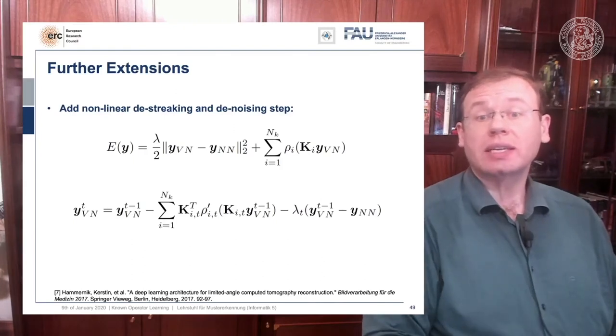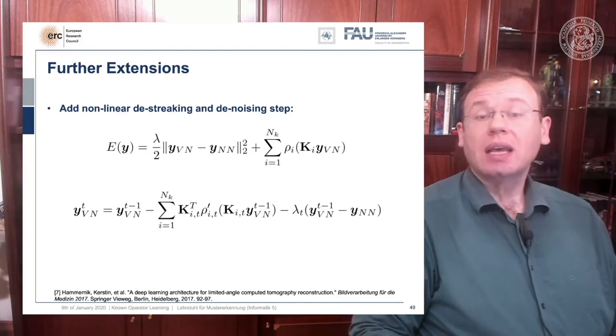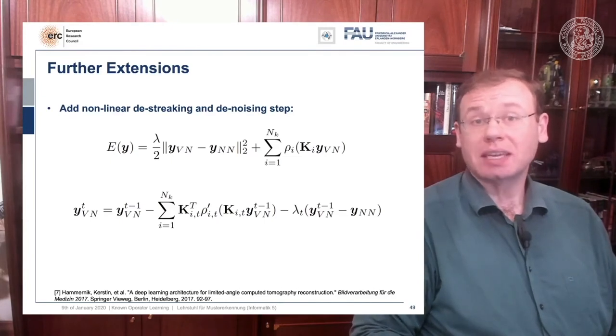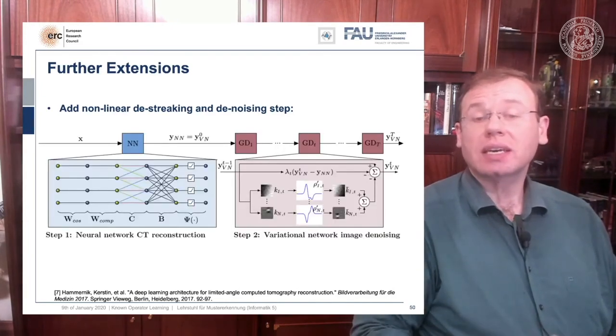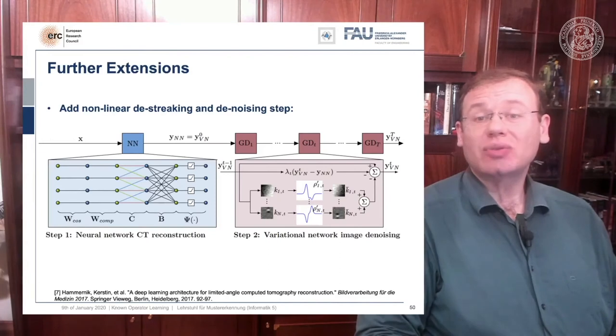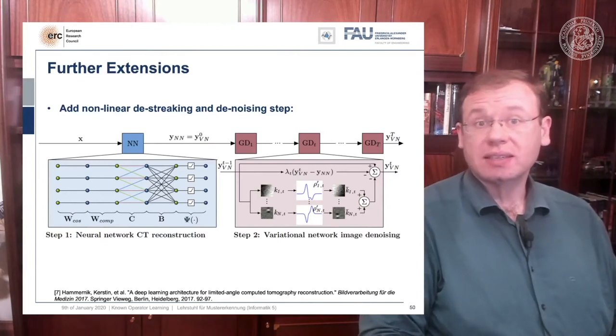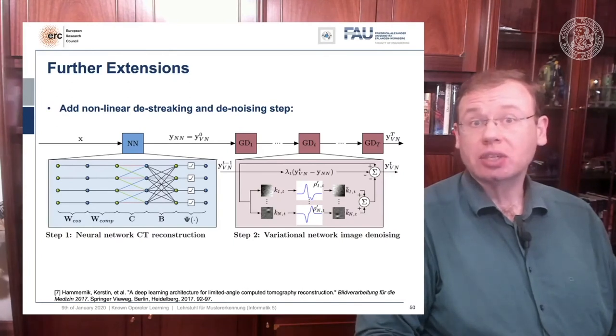This way you can then take an energy minimization like this iterative reconstruction formula here or iterative denoising formula here and map it onto the gradient. If you do so, you essentially end up with the previous image configuration minus the negative gradient direction and you repeat this step by step. Here we have a special solution because we combine it with our neural network reconstruction and just want to learn an image enhancement step subsequently. What we do is we take our neural network reconstruction and then hook up on the previous layers this de-streaking or denoising step that is trainable and it uses compressed sensing theory.